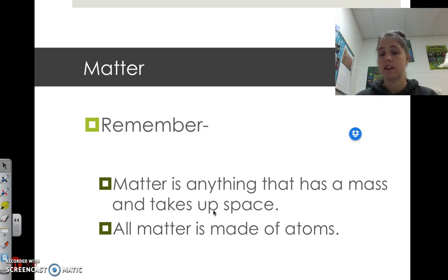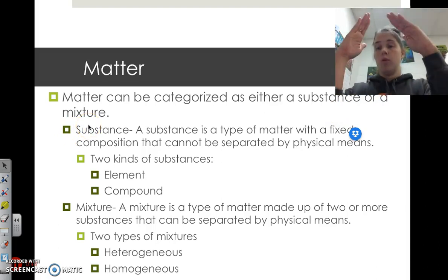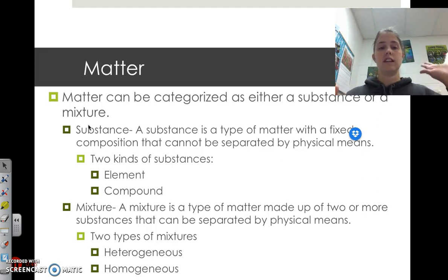So all matter is made up of atoms, and matter is anything that has a mass and takes up space. Matter can be categorized as either a substance or a mixture. From the big thing of matter, we can draw two branches, and it is either a substance or it is a mixture.